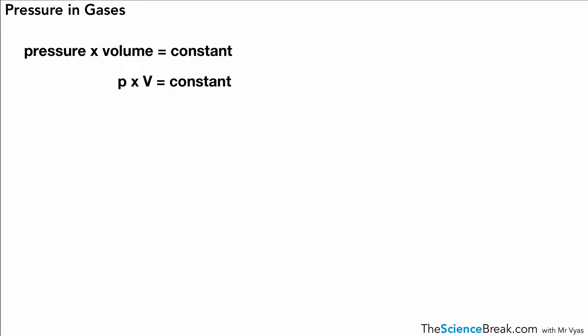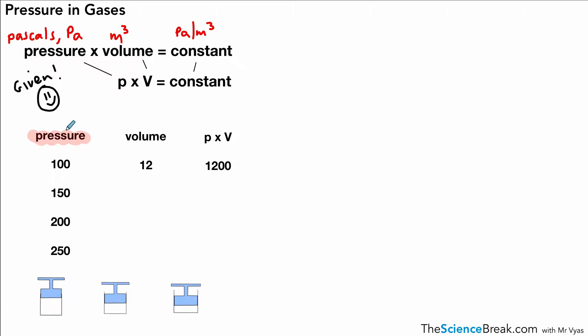Next we'll look at an equation we need to know how to use. Luckily, we don't have to memorize this - it's given on the equation sheet. The equation says pressure times volume is a constant. Pressure is measured in Pascals (Pa), volume is in meters cubed, and the constant is in Pascals per meter cubed.